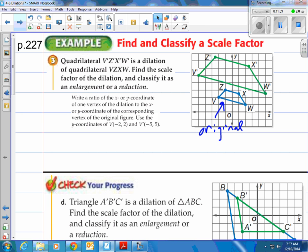But how are we going to find the actual scale factor? How do you determine the scale factor? Well, here it is. It says write a ratio of the X or Y coordinate of one vertex of the dilation to the X and Y coordinate of the corresponding vertex of the original figure. So use, in this case, they're going to use Y coordinates of the V and the V prime. Negative 2, 2 and negative 5, 5. We're going to take the Y coordinates. And the Y coordinate is the second coordinate right here. It doesn't matter which one you use. You can use the X coordinate or the Y coordinate. You're going to end up here, just because it's positive, using it.